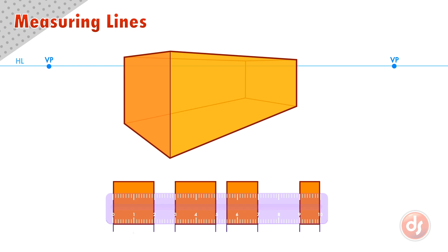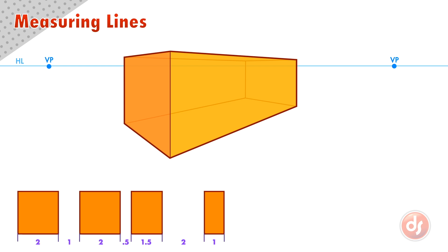The pattern of the ratio is two, one, two, half, one and a half, two, and one. Now we need to apply this pattern to our box in perspective.